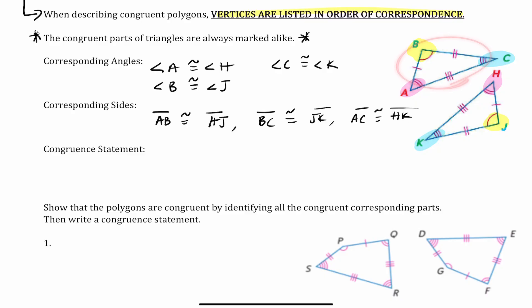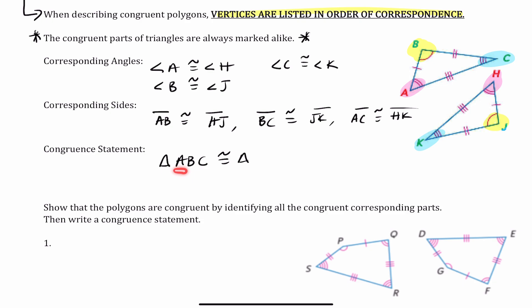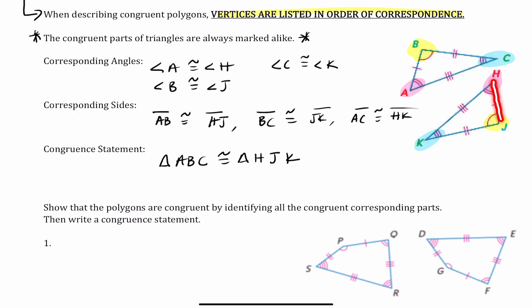We've been looking at this triangle first — we're going to call it triangle ABC. So triangle ABC is congruent to triangle... and when we write our congruence statement, we need to make sure the vertices are listed in order of correspondence. Angle A corresponds with angle H, B corresponds with J, and C corresponds with K. So triangle ABC is congruent to triangle HJK.